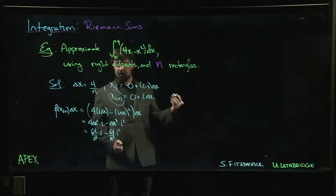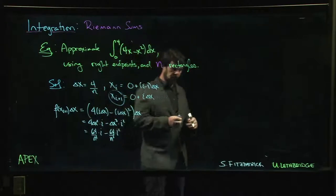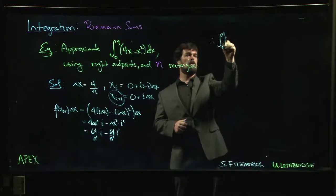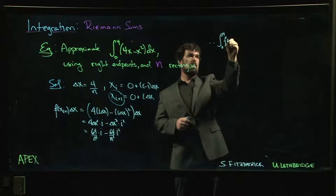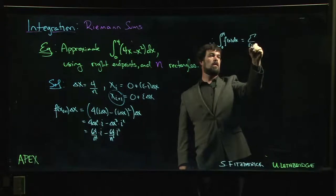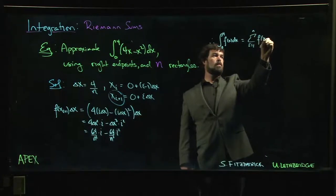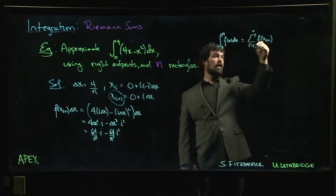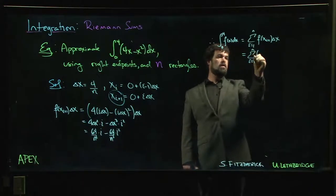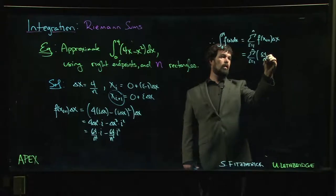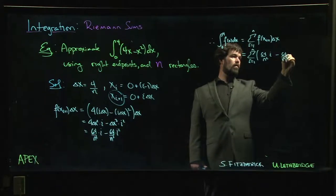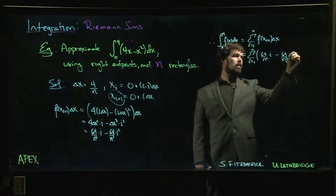Now we want to go ahead and actually do the sum. So our integral 0 to 4 of f(x) dx is equal to the sum i going from 1 to n of F of Xi plus 1 times Delta X. So it's the sum i going from 1 to n of 64 over n squared times i minus 64 over n cubed times i squared.